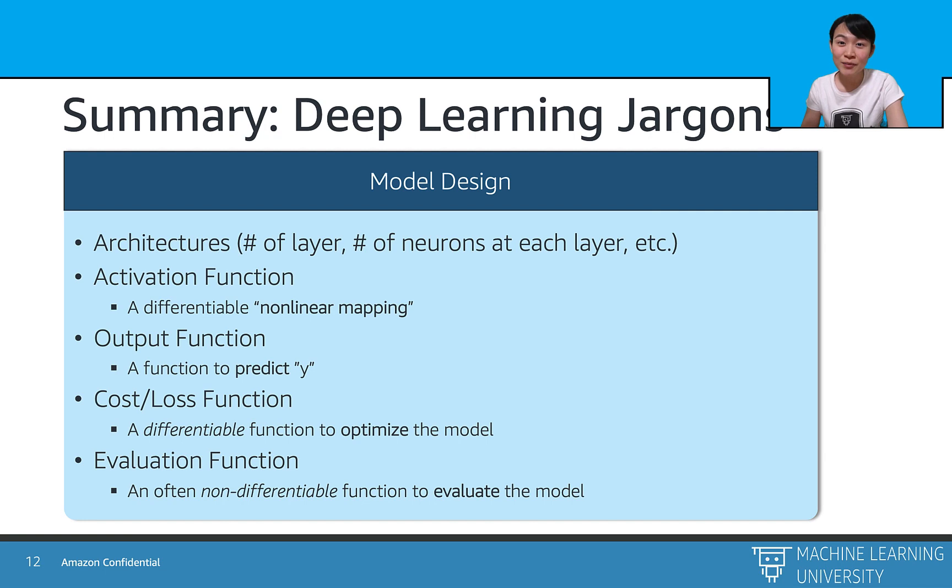Third, the output function is a function we apply to the output layers and predicts y. And next, we define the cost function or loss function, which is a differentiable function that we can apply the gradient descent.